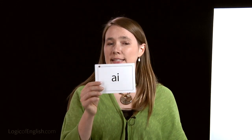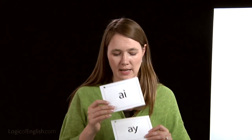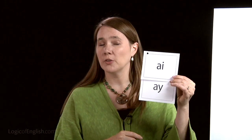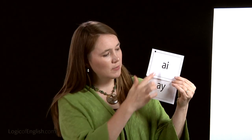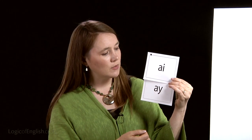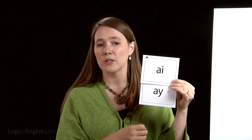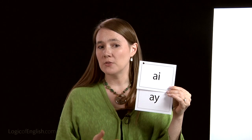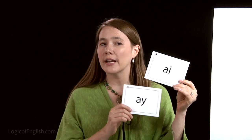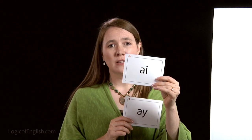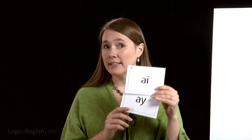Let's take a look at a few multi-letter phonograms together and put this to work. This says A, this says A, and this says A. What do you notice is the same between them? Yes, they both start with an A. And what is different? One ends in an I and one ends with a Y. Which one may I use at the end of the word? That's right, I can use this one. Why can I not use this one? Because English words do not end in I.